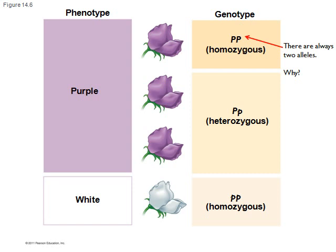Little p, little p is homozygous recessive. It's homozygous because you have two copies of the same allele, and it's recessive because the alleles are recessive. Note that heterozygous individuals are purple — they produce that purple phenotype flower. The big P is completely masking the presence of the little p. The little p is still there; you just can't see it in the phenotype of heterozygous individuals.